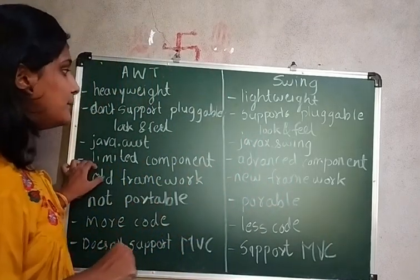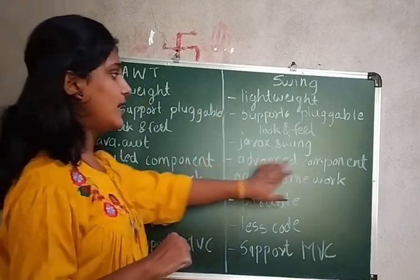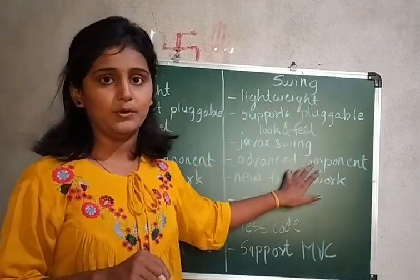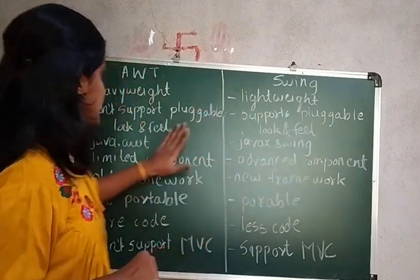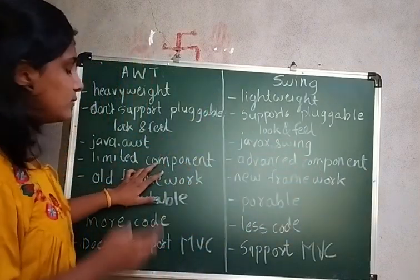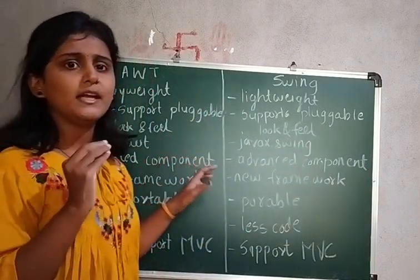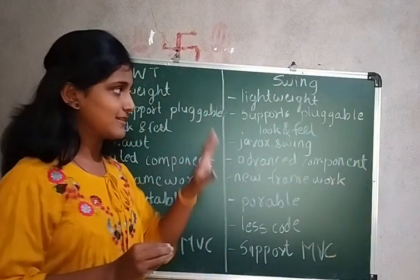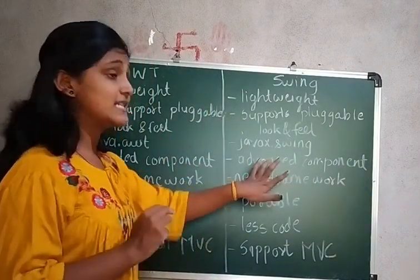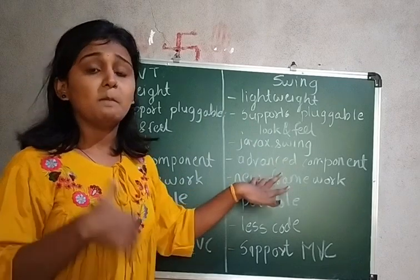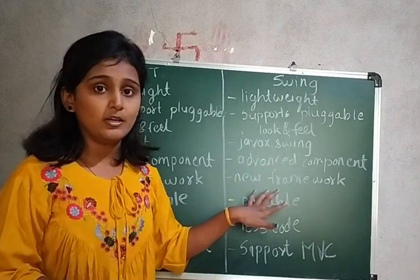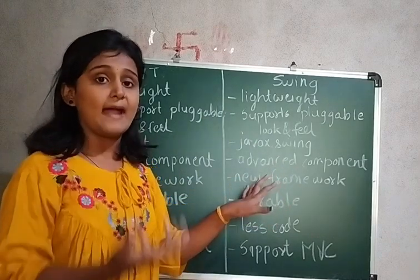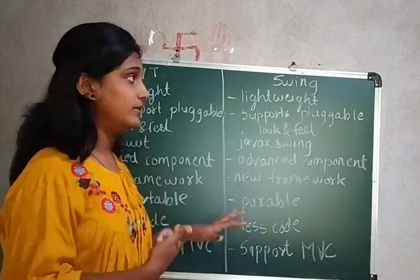The next difference is limited components versus advanced components. In AWT there are limited components compared to Swing, but in Swing there are many more components, and those are advanced components supported by Swing.